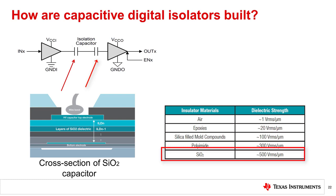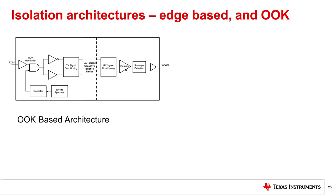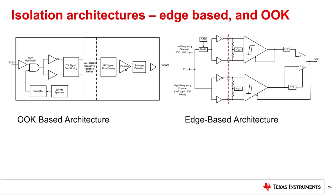Because of the closely controlled manufacturing environment and the quality of the silicon dioxide dielectric, the key contributors to isolation performance are the technology itself and the design architecture. Capacitive isolators typically employ two primary modulation architectures: on-off keying, or OOK, or edge-based. Both names describe the timing schemes used to trigger an output change.